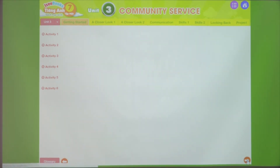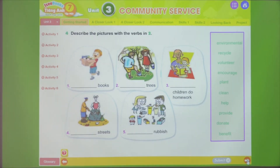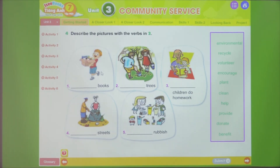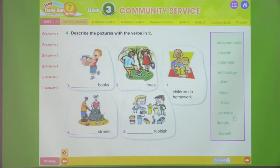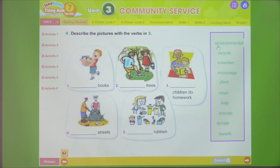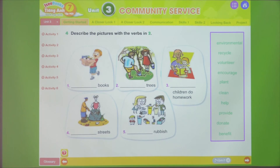Exercise 4: Describe the pictures with the verbs in exercise 2. In this exercise, use the verbs, nouns, and adjectives from the word box to fill in the appropriate positions. This is quite simple, so try it yourself and then check your results by clicking the Submit button.